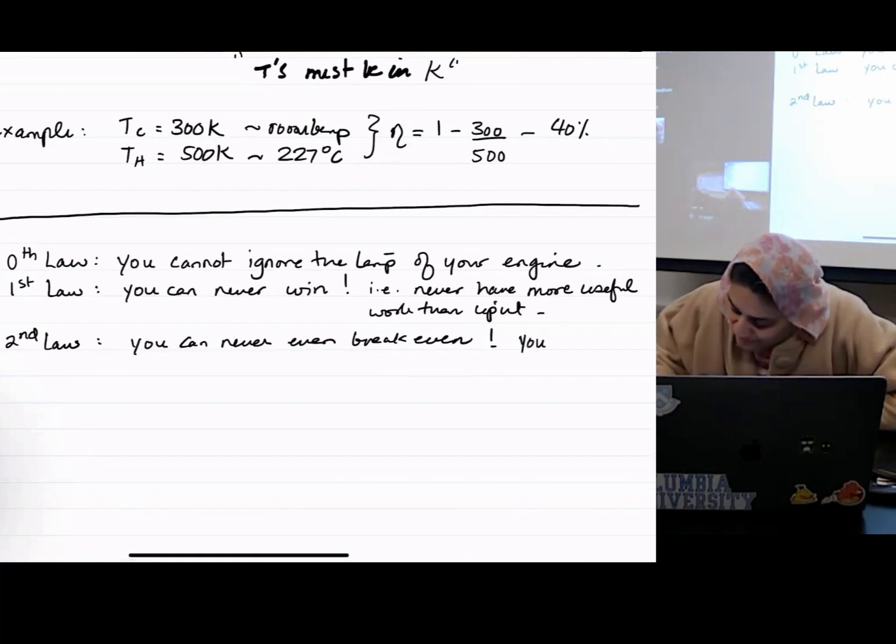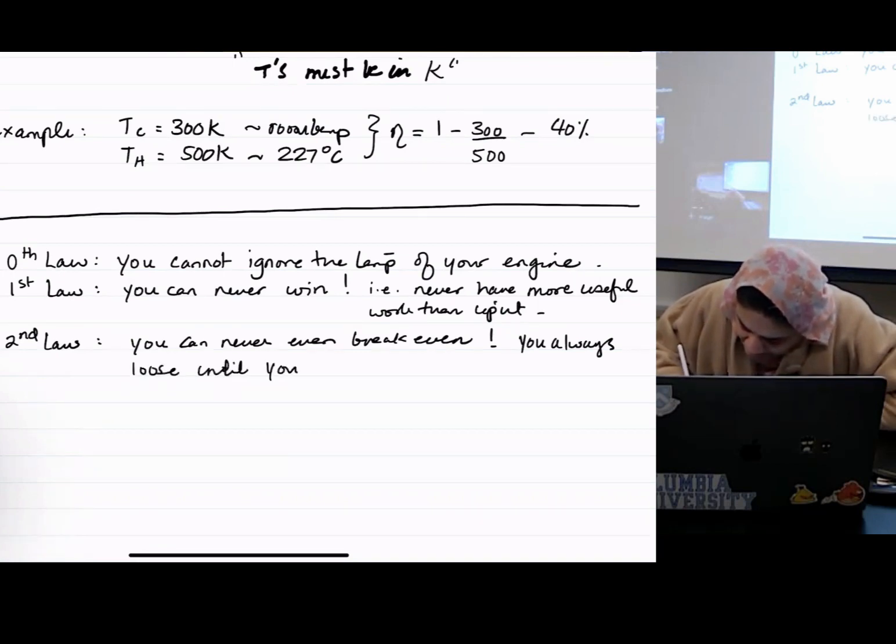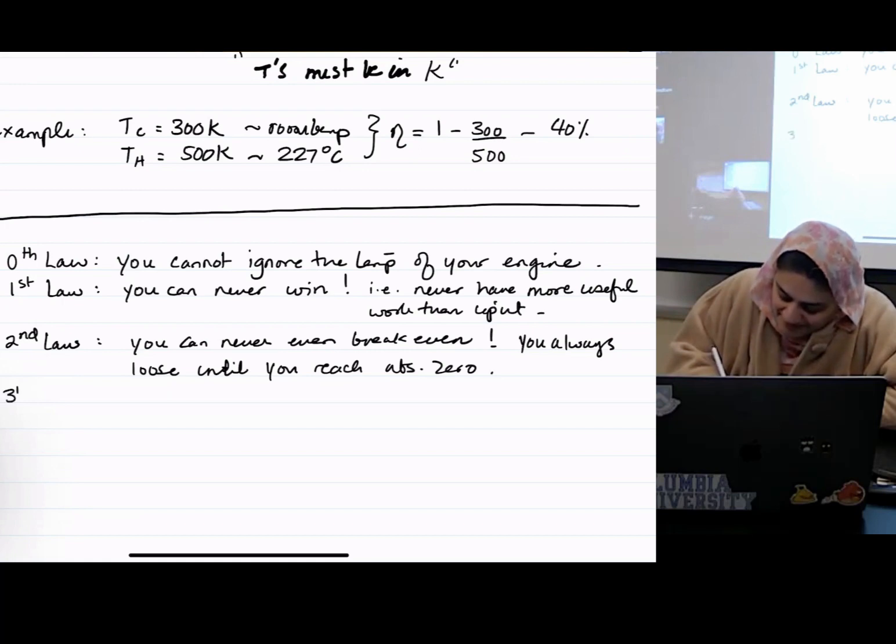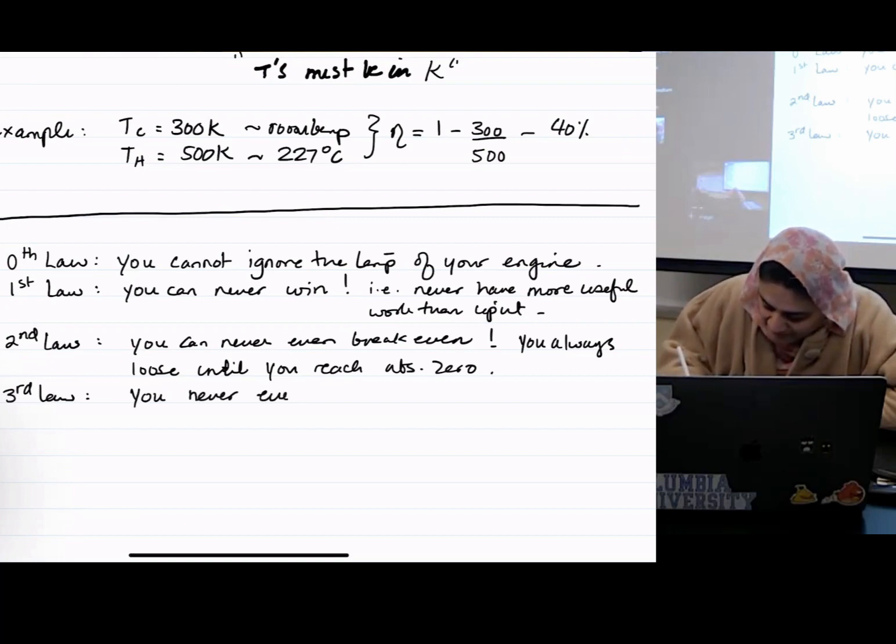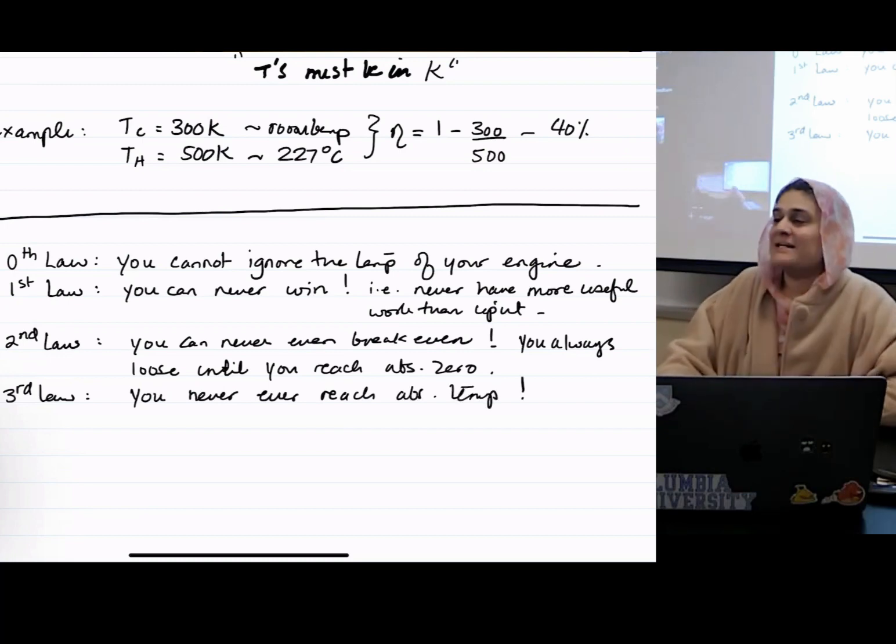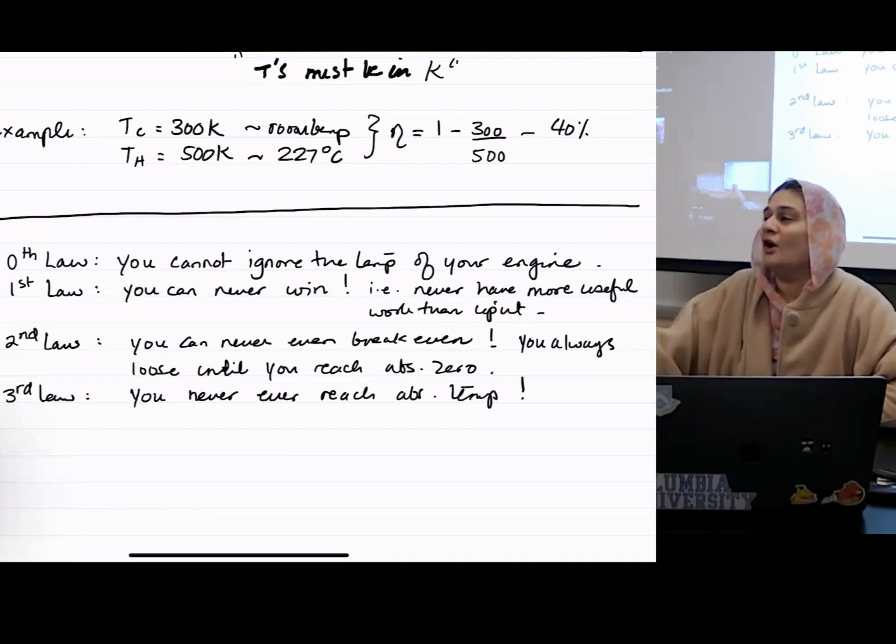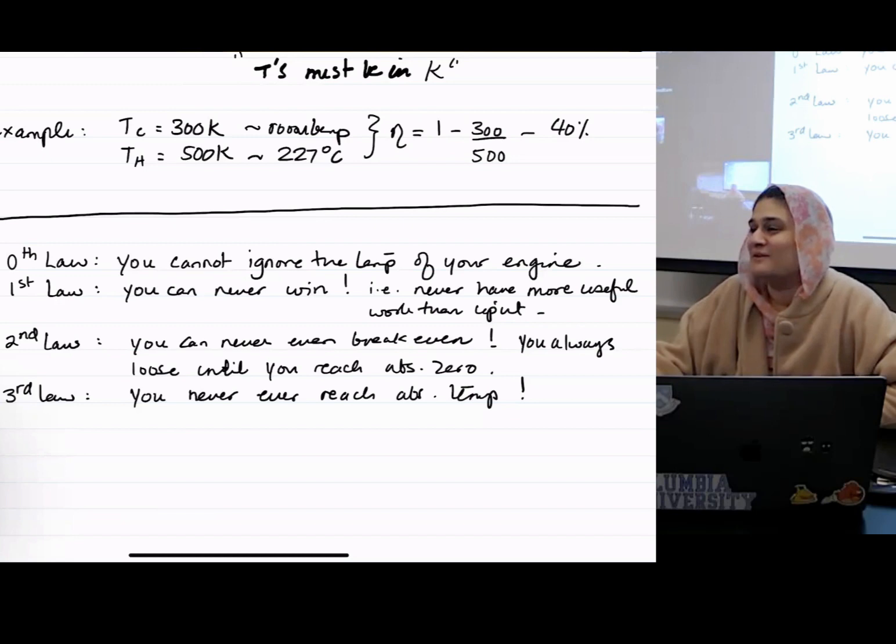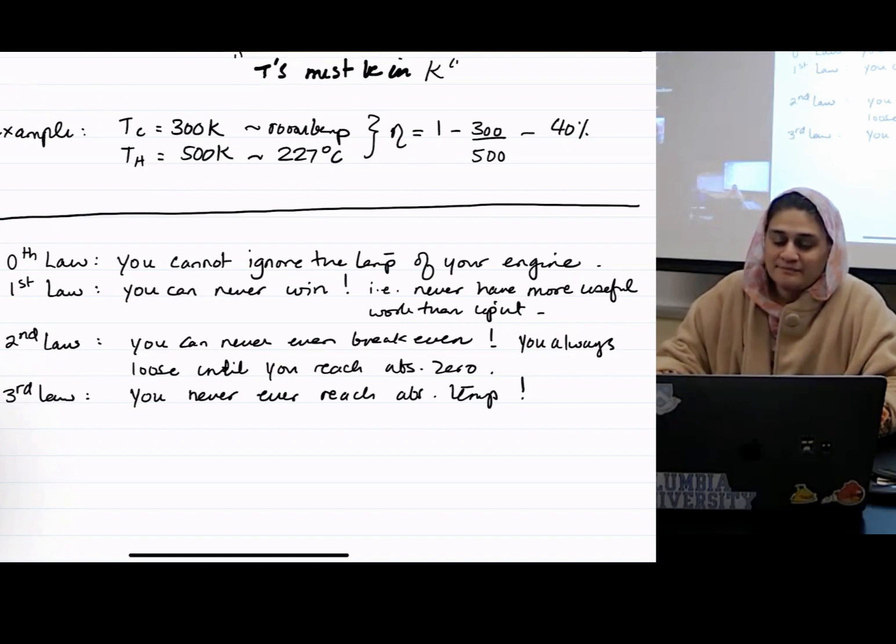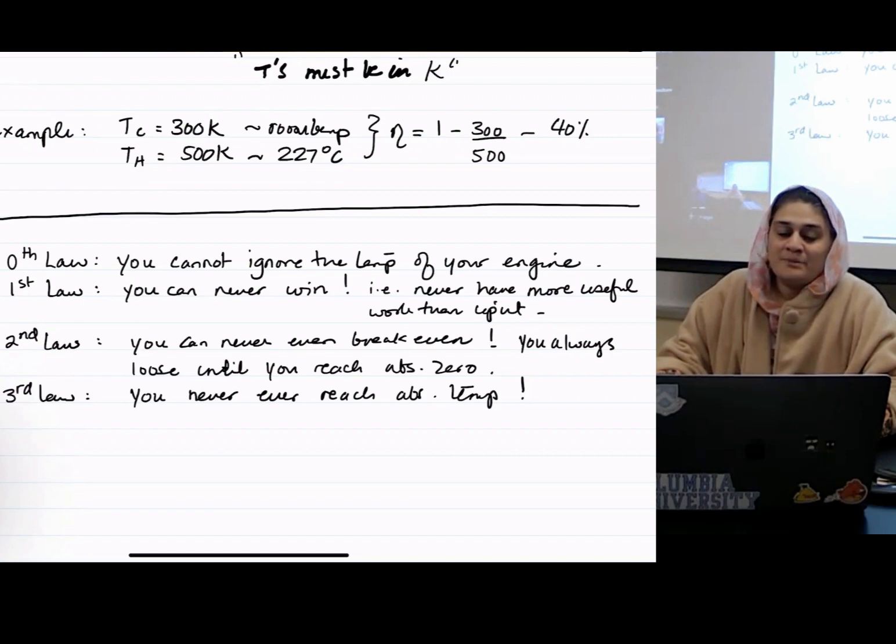You always lose until you reach absolute zero. And the third law says you never ever reach absolute temperature. So it's like literally sad face upon sad face upon sad face. So every law that you get that you develop basically messes you up even more than the last one did. So sad news, we can't even break even. We can't win. Keep that in mind when you're making your engines.